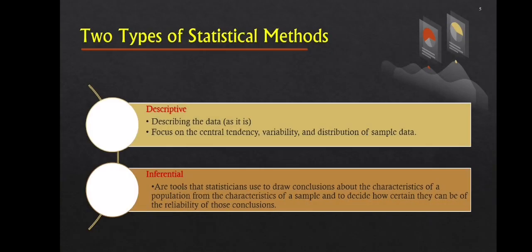There are two types of statistical methods: descriptive and inferential. Descriptive statistics focuses on sample data central tendency, variability, and distribution. And inferential statistics, which are tools used by statisticians to draw conclusions about the characteristics of a population from the characteristics of a sample and determine how certain they can be of the reliability of those conclusions.